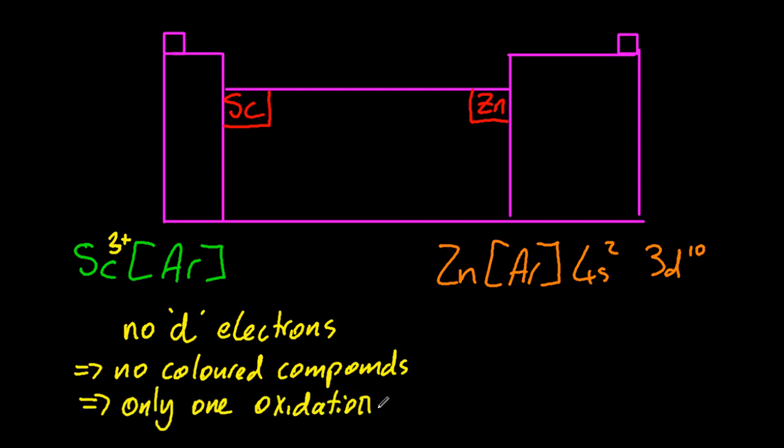Now it's the movement of electrons in the d-orbitals, which are of an energetically similar nature, that causes the traditional properties of the transition metals, and neither Scandium or Zinc ions have electron movement in the d-orbitals.